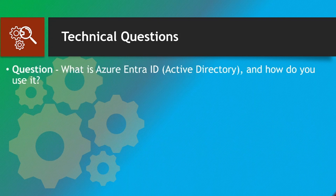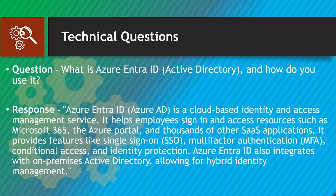What is Azure IntraID (Active Directory) and how do you use it? Azure IntraID, previously known as Azure Active Directory (Azure AD), is a cloud-based identity and access management service. It helps employees sign in and access resources such as Microsoft 365, the Azure portal, and thousands of other SaaS applications. It provides features like single sign-on (SSO), multi-factor authentication (MFA), conditional access, and identity protection. Azure IntraID also integrates with on-premises Active Directory, allowing for hybrid identity management.